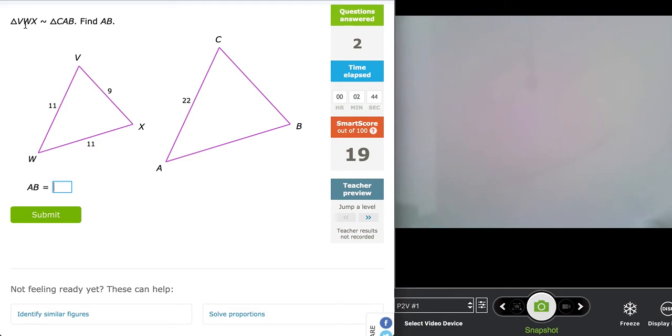Now, triangle VWX, here we have VWX, is similar to triangle CAB. That is CAB. Find AB. If we are looking for AB here, now we have to come up with the comparison ratio here. So now, in this case,